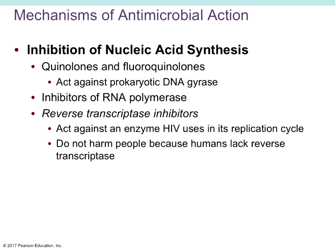Quinolones and fluoroquinolones act against prokaryotic DNA gyrase, responsible for maintaining the DNA supercoil. Inhibitors of RNA polymerase prevent adding new nucleotides to make messenger RNA or replicate DNA. Reverse transcriptase inhibitors act primarily against the HIV virus replication cycle — this seemed like a magic bullet against HIV because humans don't have reverse transcriptase, an enzyme only found in retroviruses. However, HIV is a sloppy copier and was able to make slightly different copies of reverse transcriptase so the drugs didn't work as effectively every time.